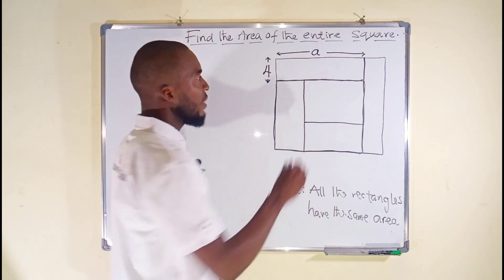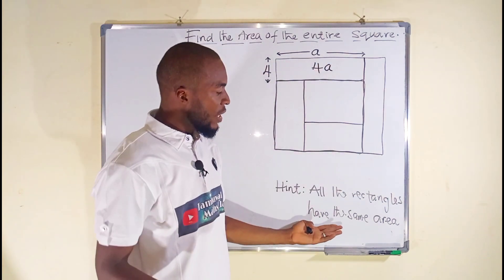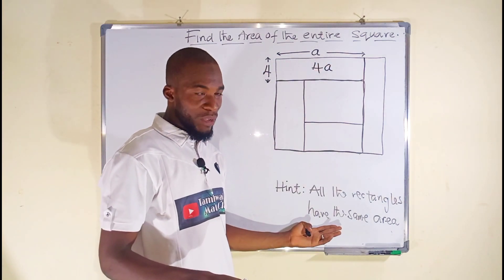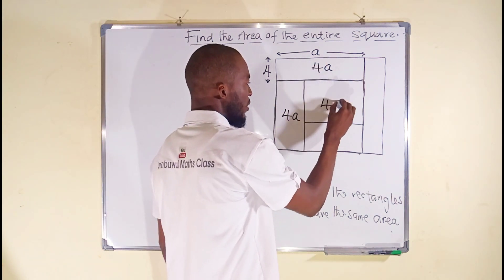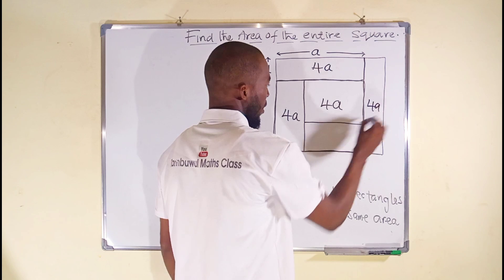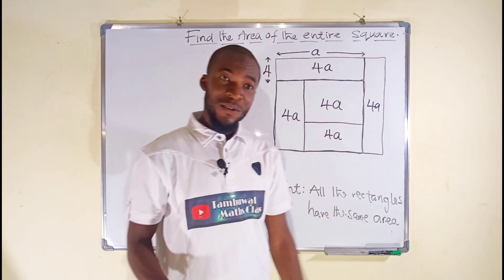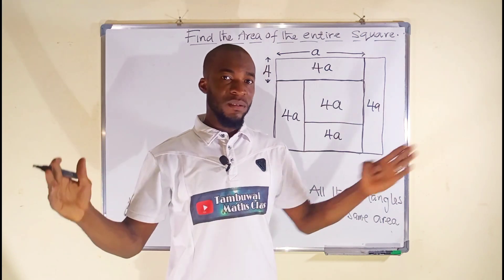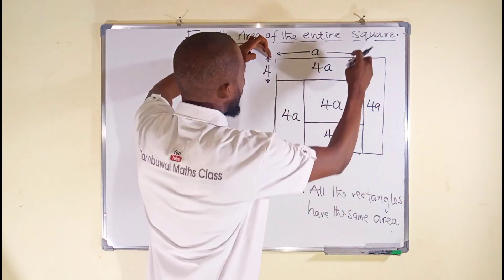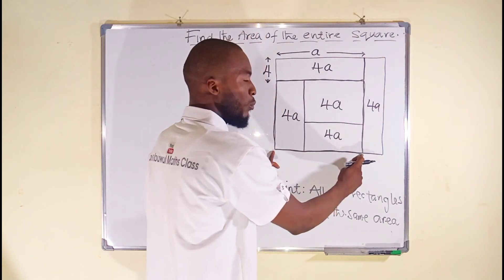But from here we learn that all of them have the same area. So if this is 4a, this must be 4a, this must be 4a, and 4a again. It is one of the properties of rectangle that opposite lengths are equal. So if from this end to this end is a, likewise this and this must be a.